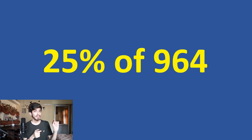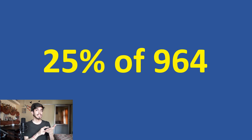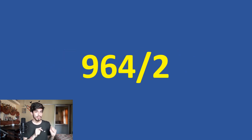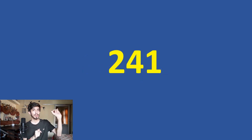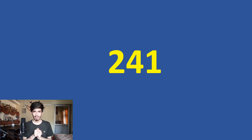Another useful trick: if you need to calculate 25% of some number, that is just one fourth of that number — just half the number and again half the number. For example, what is 25% of 964? It is 964 divided by 2, which is 482, and again divided by 2, which is 241. That is our answer.